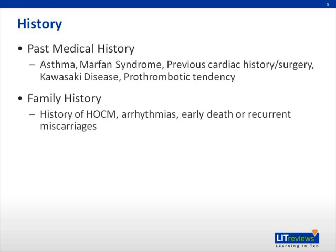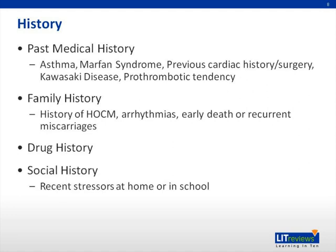When asking about family history, inquire specifically about any known abnormal cardiac structures, known history of hypertrophic obstructive cardiomyopathy, arrhythmias, early death, or even recurrent miscarriages. Rarely, drugs like cocaine may cause chest pain. When suspecting psychogenic causes, the social history is especially important to elicit any recent stresses that could account for the child's symptoms.